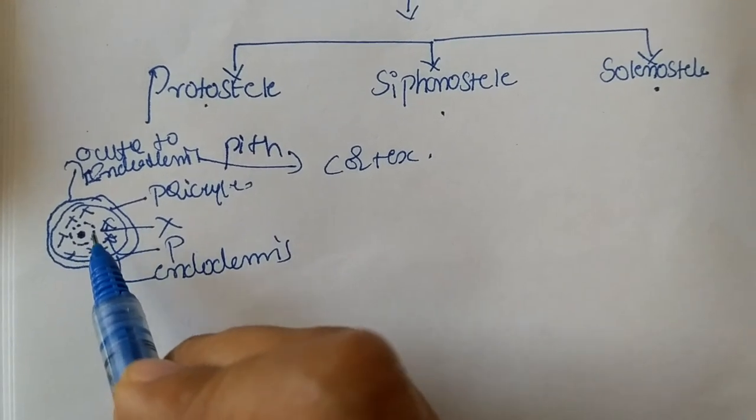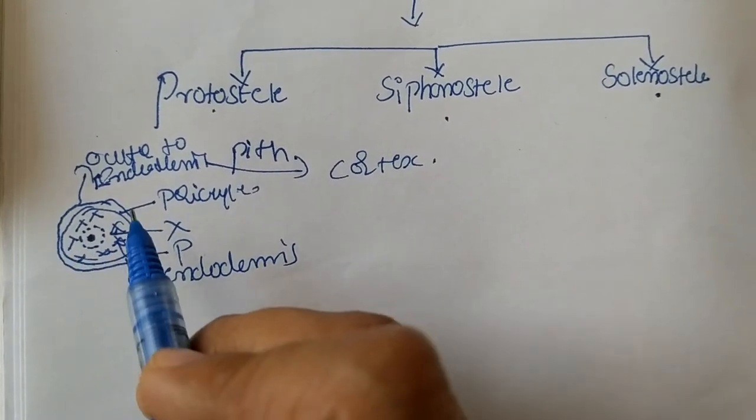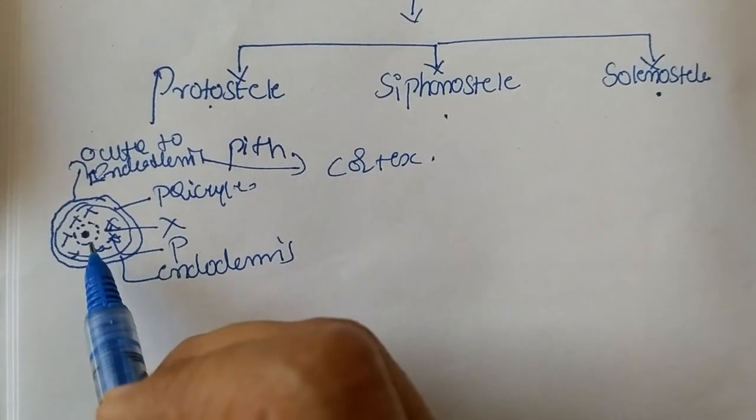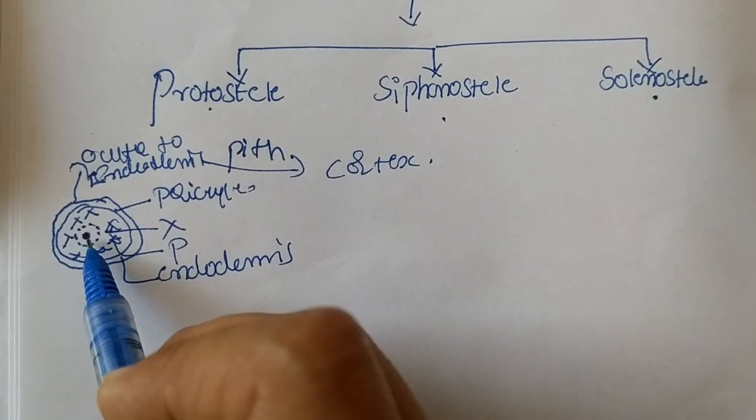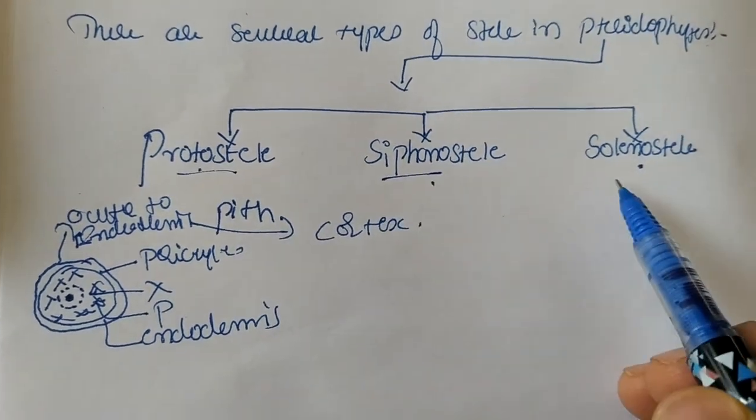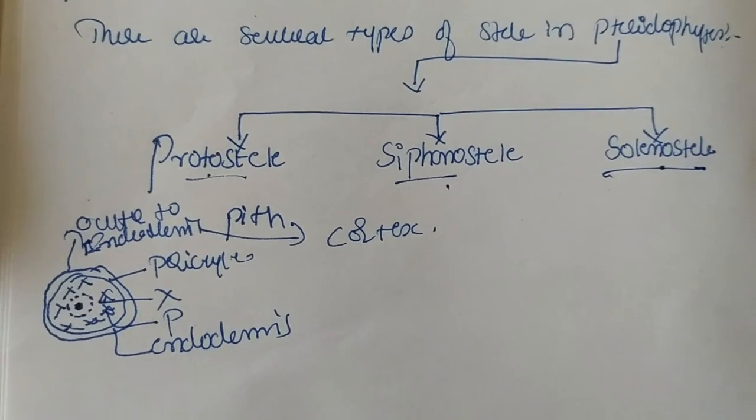Now what is the role of steel? The role of steel is to conduct water as well as the transportation of the food synthesized in the plant. So based on the presence or absence of this pith, there are different types of steel: protosteel, siphonosteel, and solenosteel.